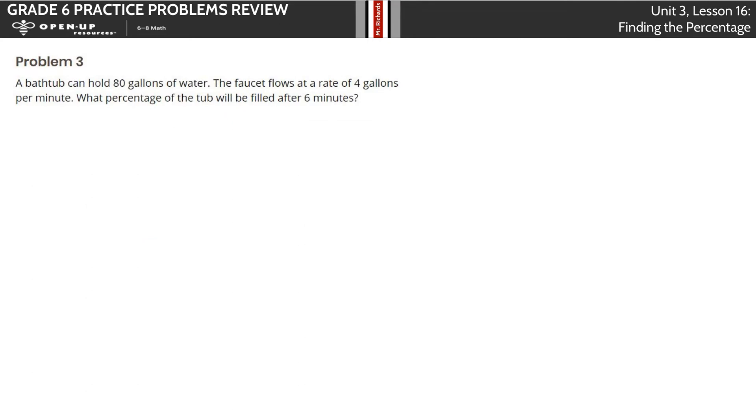This is such a fun problem. A bathtub can hold 80 gallons of water. The faucet flows at a rate of 4 gallons per minute. What percentage of the tub will be filled after 6 minutes? How much water has come out after 6 minutes? If we're going at 4 gallons per minute, and we multiply that by our 6 minutes, that means we've used 24 gallons of water.